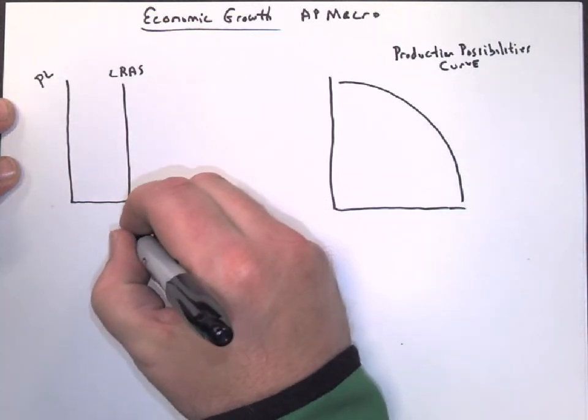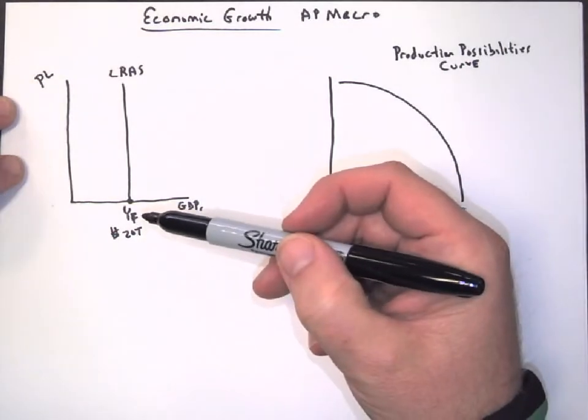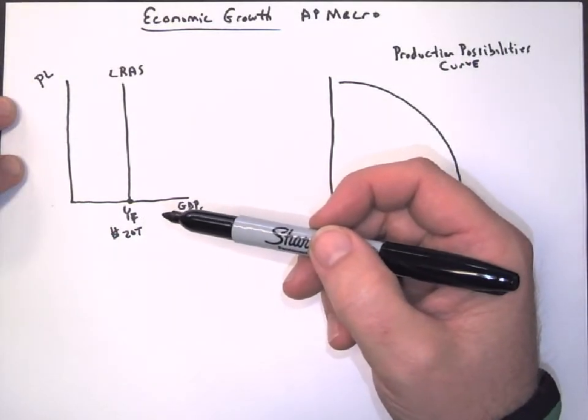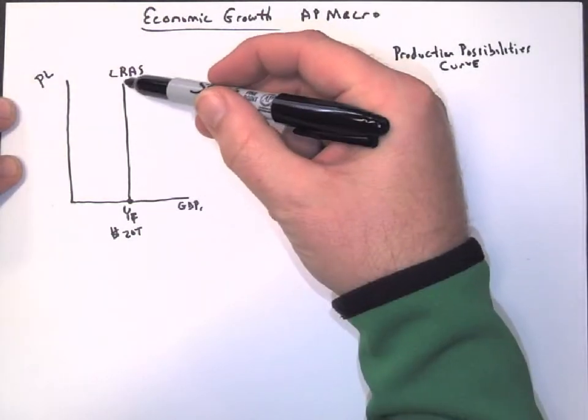So say, for example, this is $20 trillion. That means that if everyone has a job, and all the jobs in the economy that are available are all filled, and our people, our resources, and our technology are as good as they possibly can be, then we would produce this much GDP.